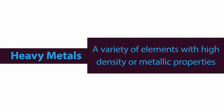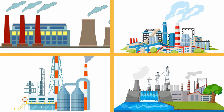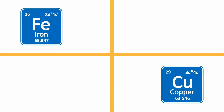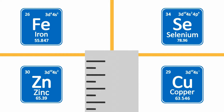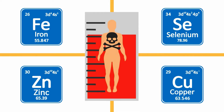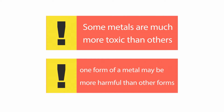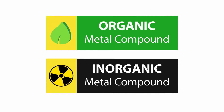The term heavy metals may refer to a variety of elements with high density or metallic properties. These elements are found naturally throughout the environment and are also used by common industries. Some of them, such as iron, copper, selenium, and zinc, are required in trace amounts by the body for normal function, but can be toxic at higher levels. Some metals are much more toxic than others, and one form of a metal may be more harmful than other forms, such as an organic versus an inorganic metal compound.